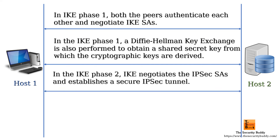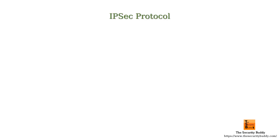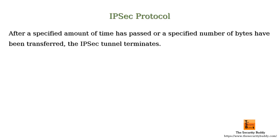Then IKE Phase 2 starts. In IKE Phase 2, IKE negotiates the IPsec SAs and establishes a secure IPsec tunnel. Once the IPsec tunnel is established, data can be transferred securely through the tunnel. After a specified amount of time has passed or a specified number of bytes have been transferred, the IPsec tunnel terminates.